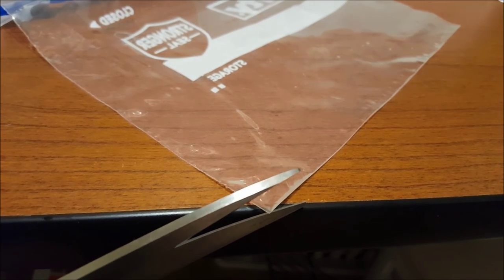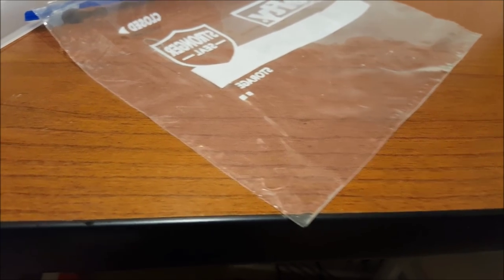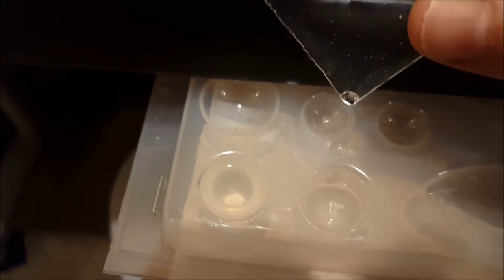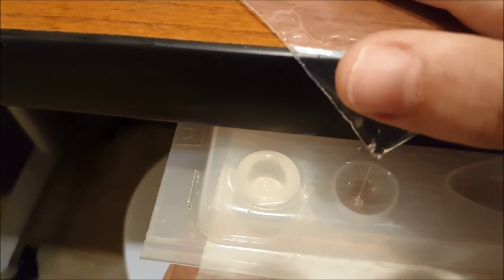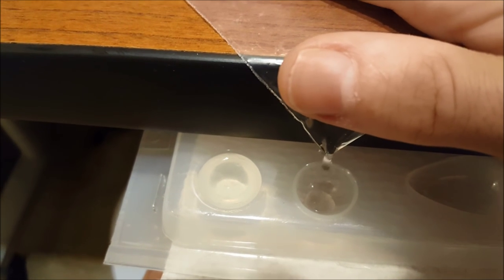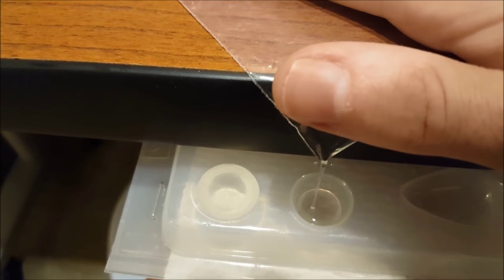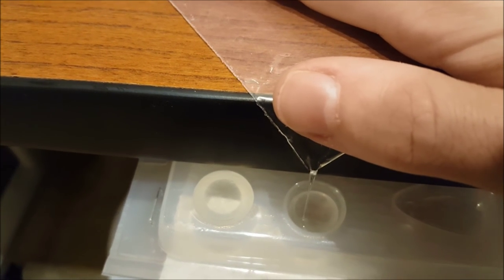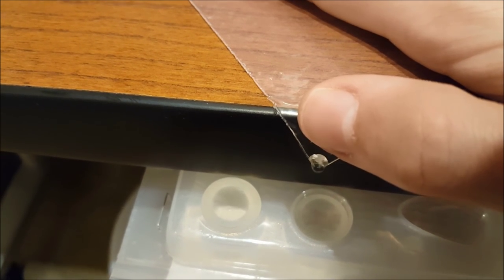Now that it's mixed I set the bag on the edge of a table or block and I cut the tiniest snip off the corner. And now I can gently squeeze out the resin into the mold. I'm not pressing really hard because I don't want to pull any unmixed layers off of the edge of the bag. Just the bulk of the mixed resin.